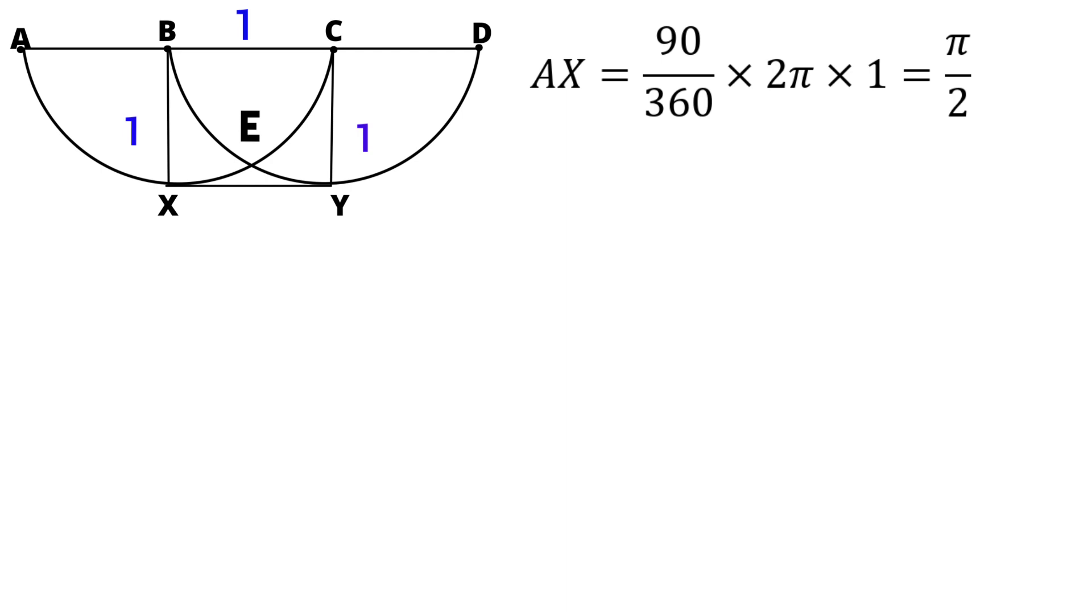Similarly, YD is also the quarter circumference of a circle. So, the arc length of YD is also π by 2.